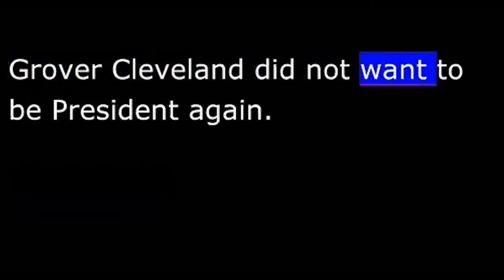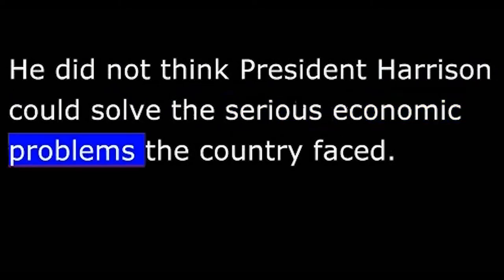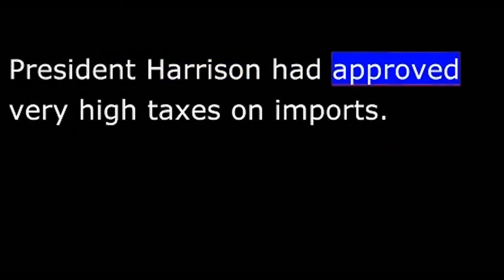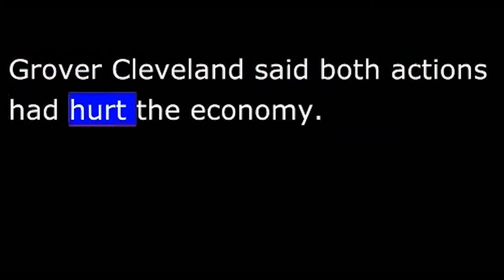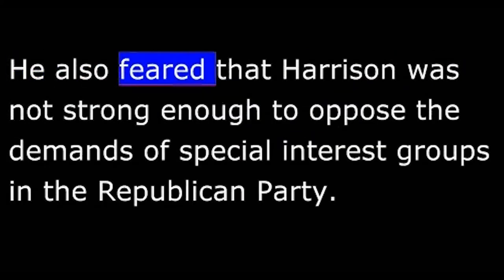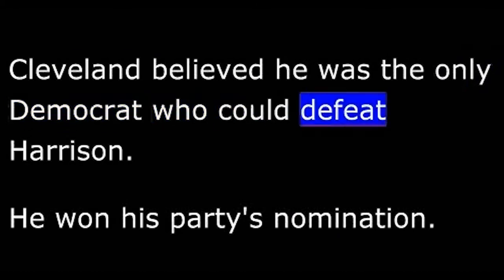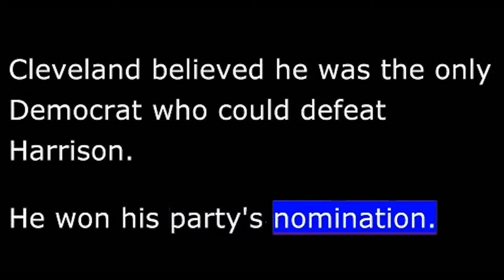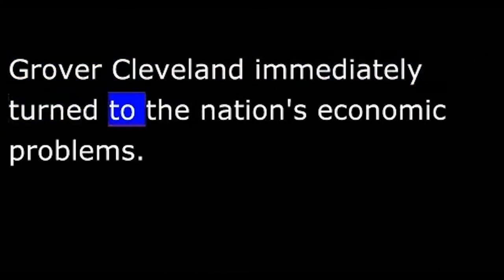Grover Cleveland did not want to be president again, but he was worried about the future of the United States. He did not think President Harrison could solve the serious economic problems the country faced. President Harrison had approved very high taxes on imports. He also had approved an increase in the supply of silver money. Grover Cleveland said both actions had hurt the economy. He also feared that Harrison was not strong enough to oppose the demands of special interest groups in the Republican Party. Cleveland believed he was the only Democrat who could defeat Harrison. He won his party's nomination and he was easily elected to a second presidency.